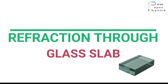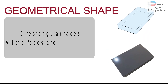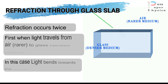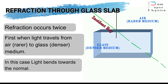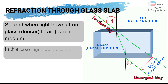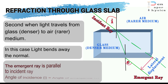Let us now understand refraction through a glass slab. A glass slab is a transparent, cuboidal medium with six rectangular faces, all parallel to each other. When a light ray is incident on one surface of the glass slab, it refracts from rarer to denser medium and bends towards the normal. When the ray reaches the opposite face, it again refracts from denser to rarer medium and bends away from the normal. Due to the slab's geometrical shape, the emergent ray becomes parallel to the incident ray, the angle of incidence equals the angle of emergence, and the emergent ray suffers a lateral displacement.